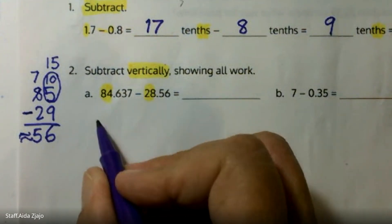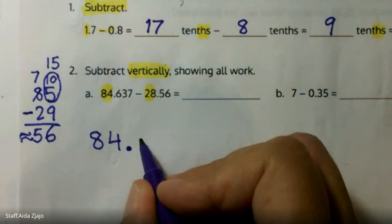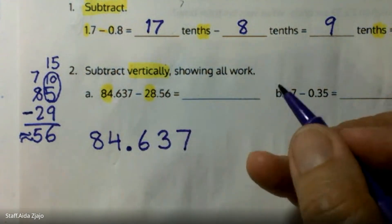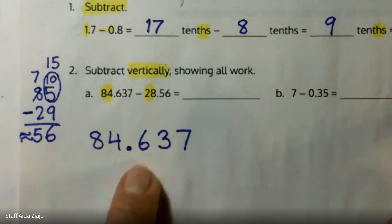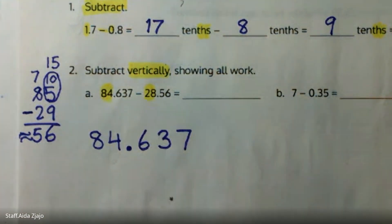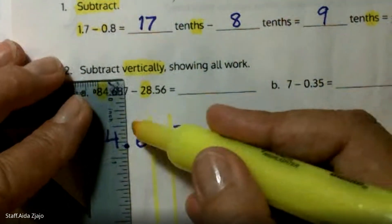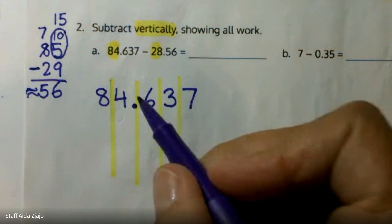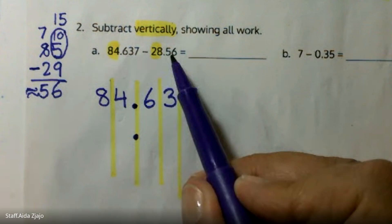So now for part A: 84 whole, 8 tenths, 4 ones, decimal point, 6 tenths, 3 hundredths, and 7 thousandths. When you have 6 tenths, 3 hundredths, and 7 thousandths, you can see this all together as 637 thousandths. After I place the first number, I'm going to draw my line with my highlighter so it helps me stay clean and use the correct place value, and also keep the decimal in the same spot.